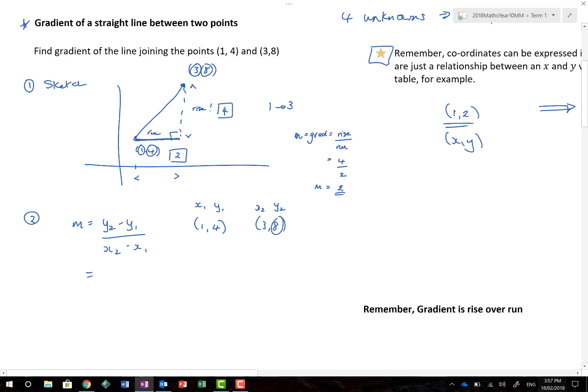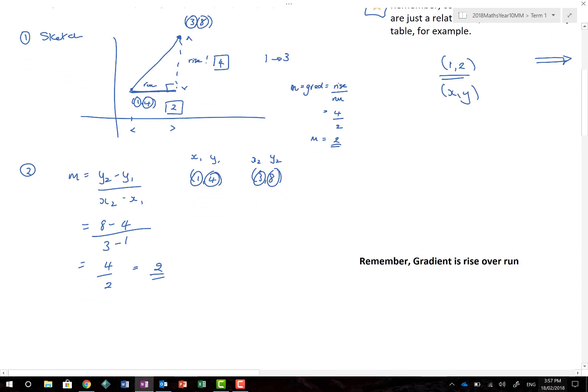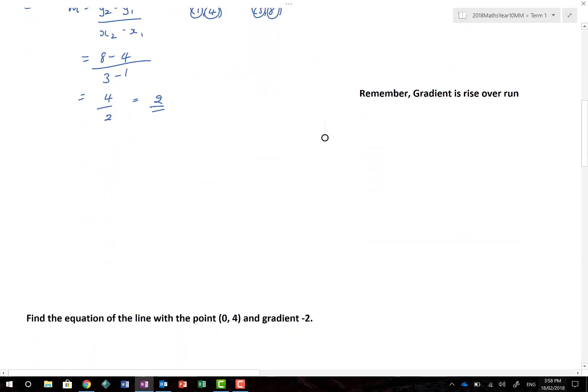So y2 is 8, minus y1 is 4, divided by x2 is 3, minus x1. 8 minus 4 is 4 when I went to school, 3 minus 1 is 2, which gives me the gradient of 2. Now actually, that method works really well regardless, but what I see it work really well is where we have negative coordinates. Drawing sketches where we have negative coordinates can actually be quite challenging.